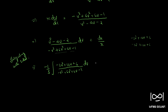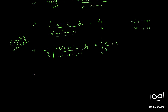Integrating both sides equals the integral of dx/x + c. This gives minus 1/3 · log(−v³ + 6v² + 6v - 1) = log x + log c₁.